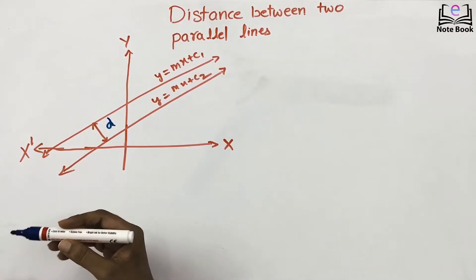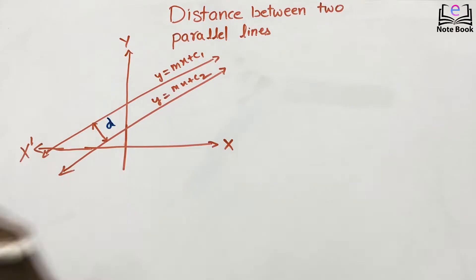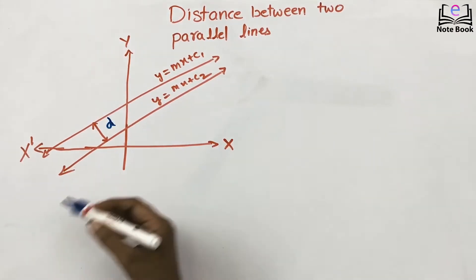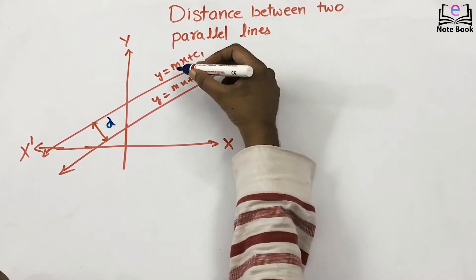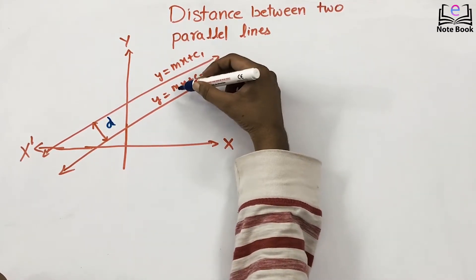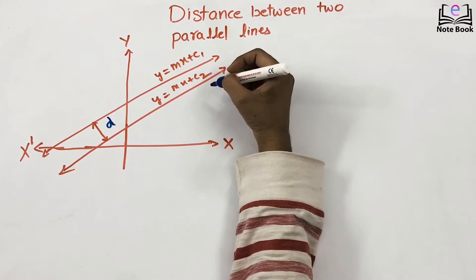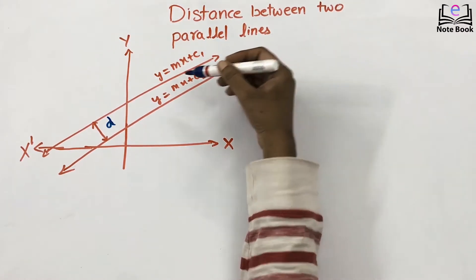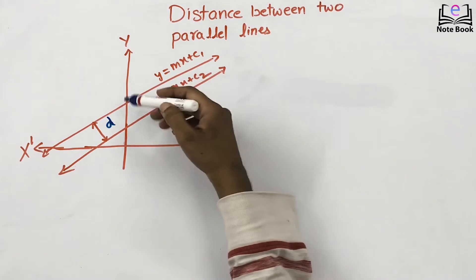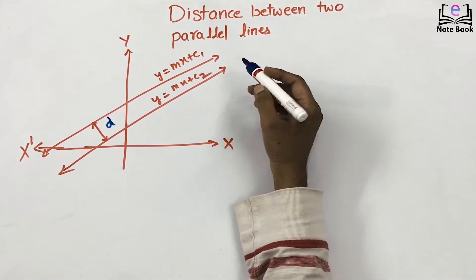Today, we will derive the formula for distance between two parallel lines. Consider two lines: the first line with equation y = mx + c1 and the second line with equation y = mx + c2. I have to derive the formula for the distance between these two parallel lines.